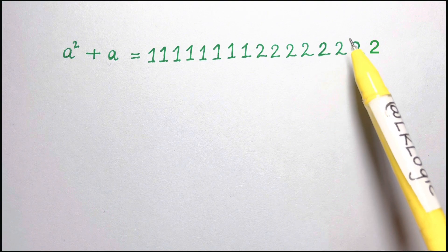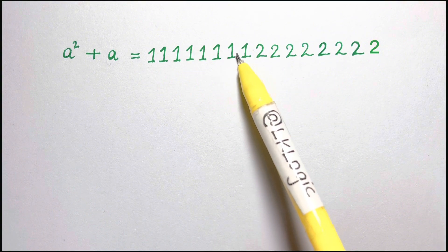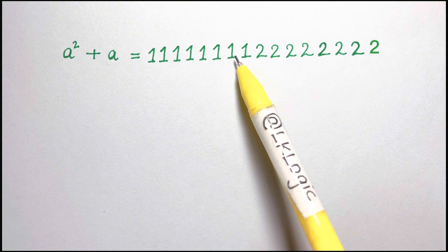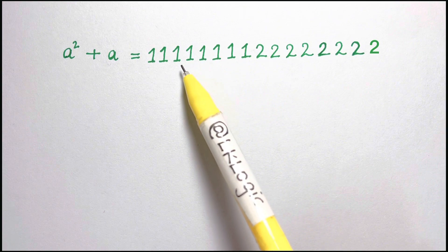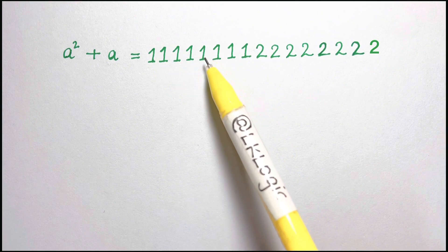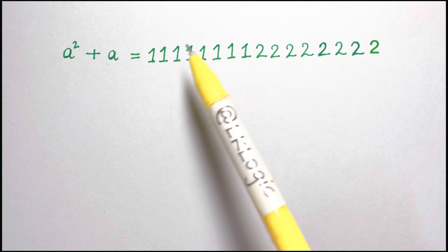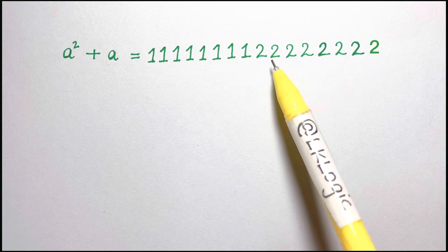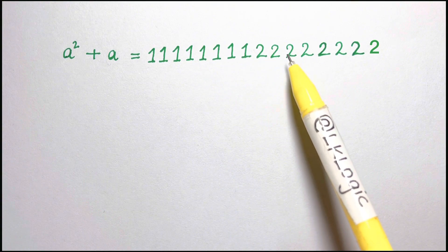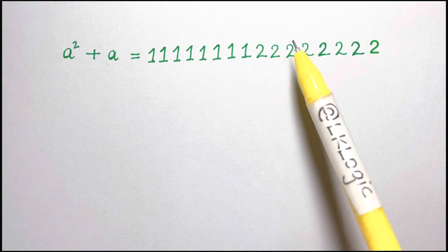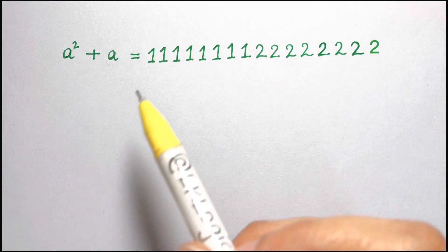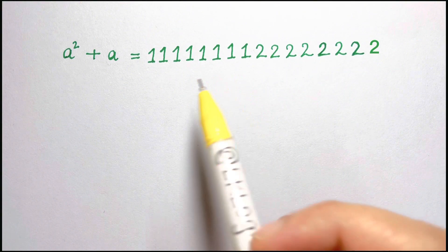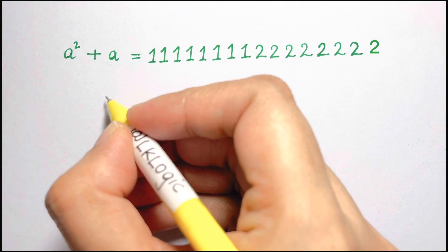What we're going to do is: here, as you can see, 11111111 can be 1 times 10 to the power of 8. And 22222222 is 2 times 10 to the power of 8. So we're going to substitute 11111111 as t.